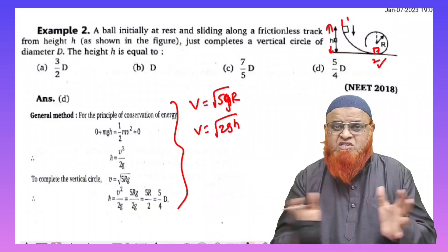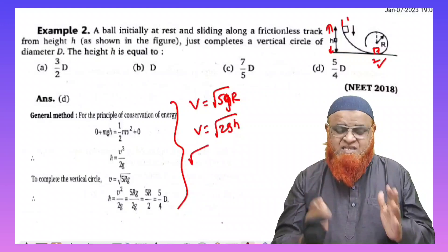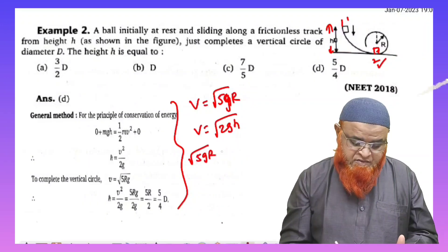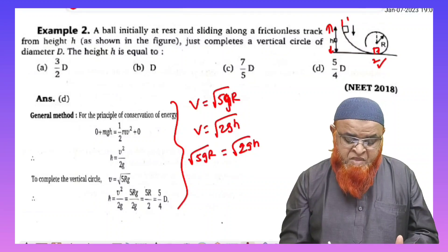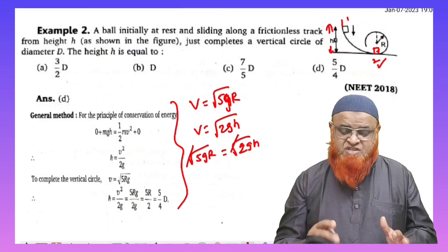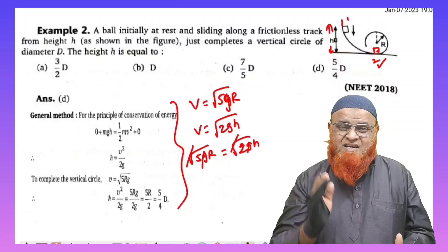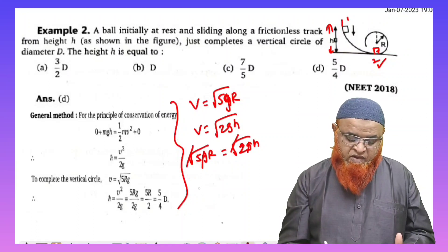So these two velocities will be exactly the same. You can write here, it is very simple. Just write 5gr equals root of 2gh. Squaring on both sides, the roots will get cancelled, root and root you can cancel out.